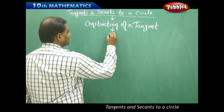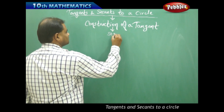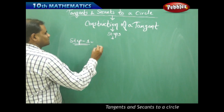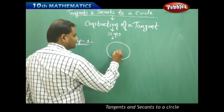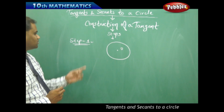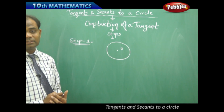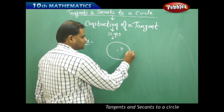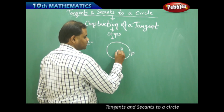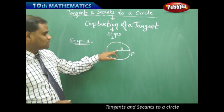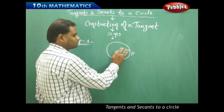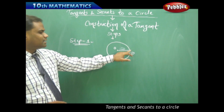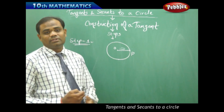Let me start with the steps. Step 1: draw a circle with center O. Then I take a point P on the circle — any point P — so that I join OP. Clearly, OP is the radius which passes through the point P. For any point P on the circle, OP is the radius, and let's assume this as the point of contact where I want to draw a tangent to that circle.